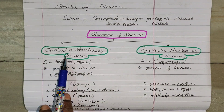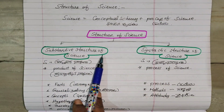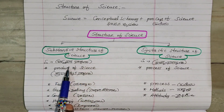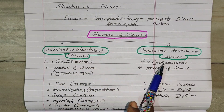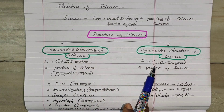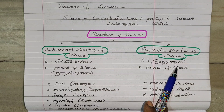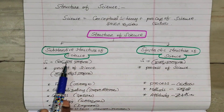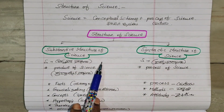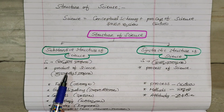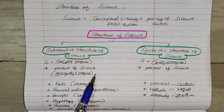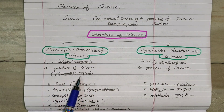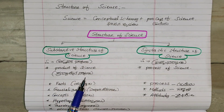The Substantive Structure of Science is the real-life structure, also called the Product of Science.